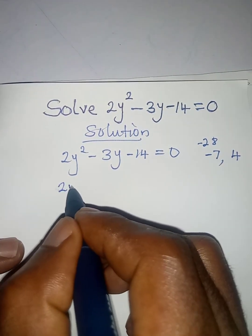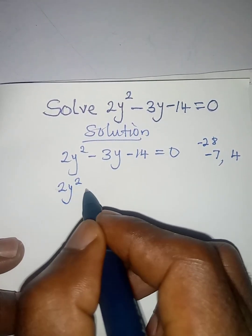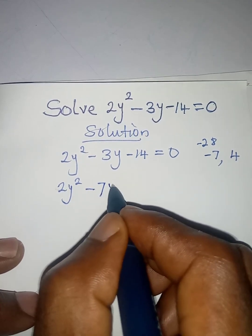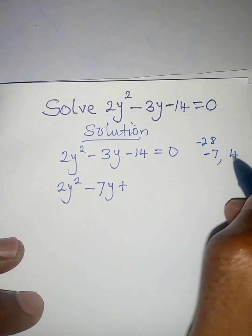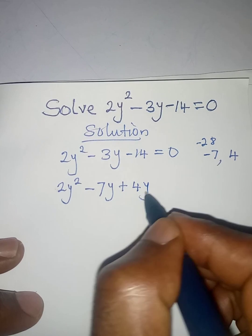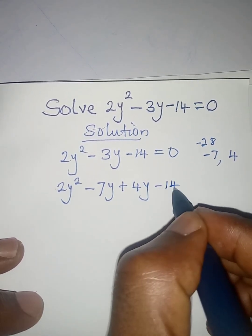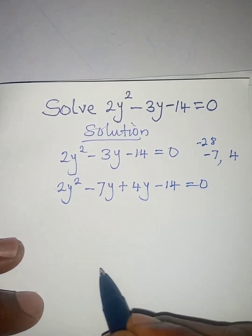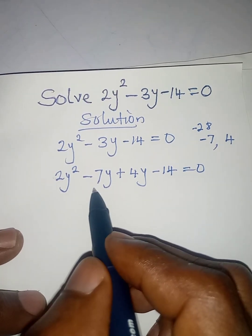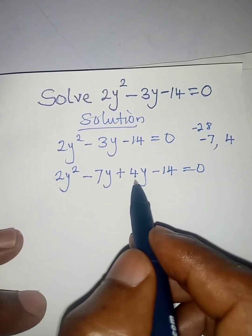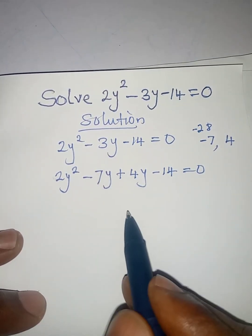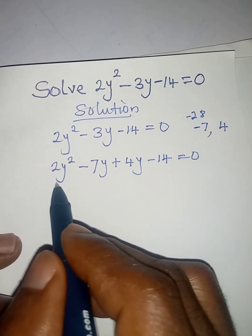I will take another step: 2y² - 7y + 4y - 14 = 0. Remember, minus 7y plus 4y will give us this minus 3y. So the next thing is to group it and factorize it.